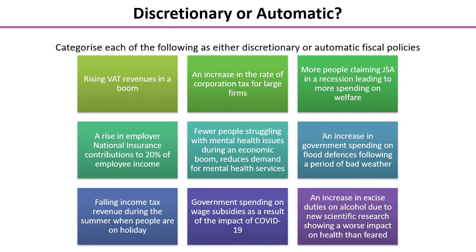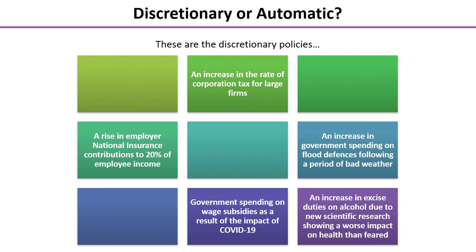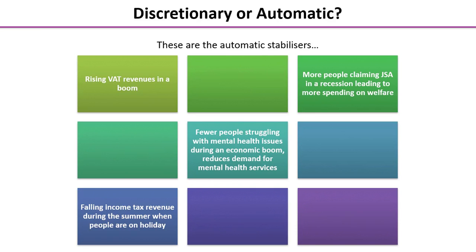Here is a quick task: there are nine fiscal policies on the screen, and your task is to categorize them as either discretionary or automatic. Pause the video and when you're ready, restart. The ones that remain are the discretionary policies — these are where the government has made an active policy change. The others are the automatic stabilizers, where government spending or tax revenue has changed simply as a result of a change in the level of economic activity.